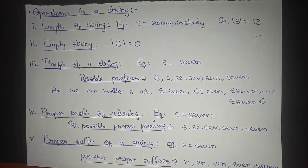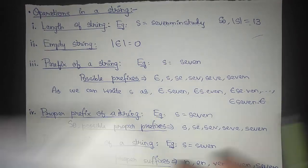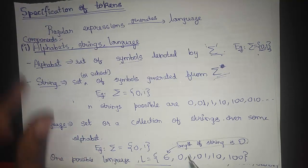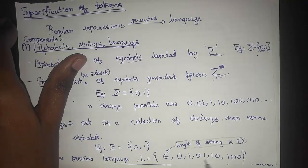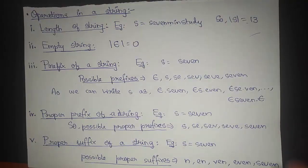An empty string is where the length of a string is 0. Epsilon represents this empty string, as mentioned in the language section. In a language, strings can have length 0 (epsilon), length 1, length 2, length 3, and so on — that is what is happening within a language.